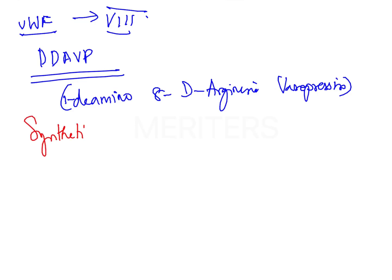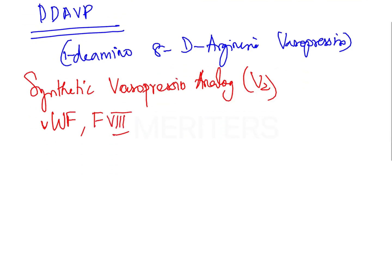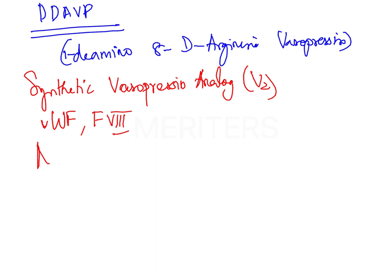Desmopressin is a synthetic vasopressin analog — specifically a V2 receptor analog. It increases the endogenous release of von Willebrand factor and Factor VIII. It is majorly useful in mild hemophilia and certain types of von Willebrand disease.